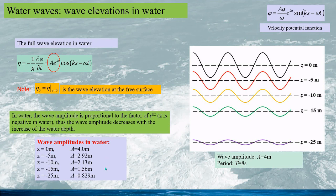At the water surface z equal to zero, the amplitude is 4 meters. In 5 meters of water depth, the wave amplitude is 2.92 meters. In 10 meters the wave amplitude is 2.13 meters, and at 25 meters of water depth, the amplitude is less than 1 meter.